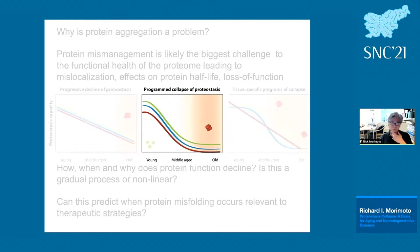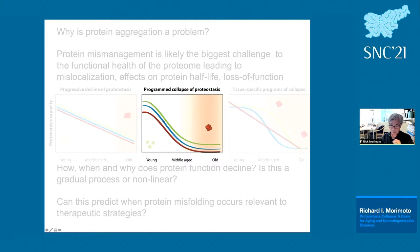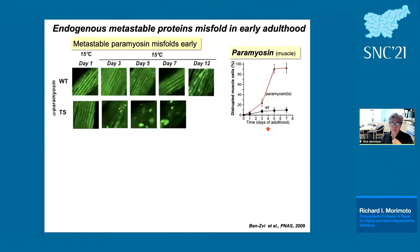We draw a clear conclusion: proteostasis collapse in aging is genetically programmed and occurs at the transition of reproduction. Key insights came from Anat Ben-Zvi's experiments using temperature-sensitive mutant proteins, monitoring a series of different ts proteins where there was no stress and no polyglutamine — just aging. In wild-type animals from day one to day 12, paramyosin striations in individual muscle cells are normal, but they can be quantified for disruption across the 95 body wall muscle cells as a function of age.